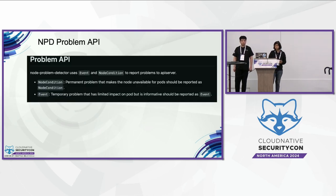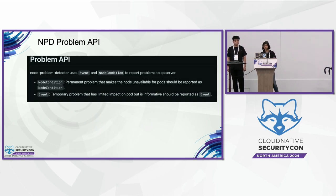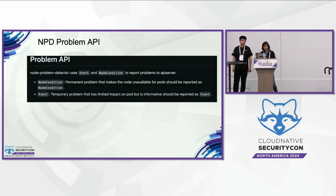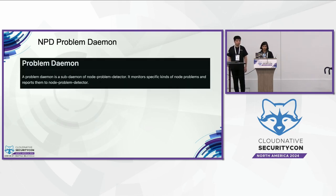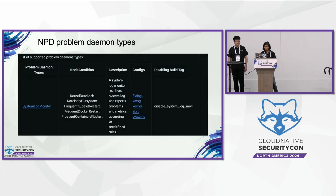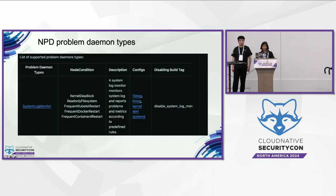Let's go over some of the concepts of NPD. It has a problem API to report problems. A problem can be a permanent problem, which reflects in a node condition on the node object, implying that node is not suitable for workloads anymore. It also lets us report a temporary problem, which is a recoverable error that shows up as an event. Node problem detector itself runs as a daemon set on your cluster. Internally, it has a concept of sub-daemons — different daemons designed to watch for different error signals. In our example, we'll leverage the system log monitor sub-daemon of NPD, specifically to watch kernel message logs.